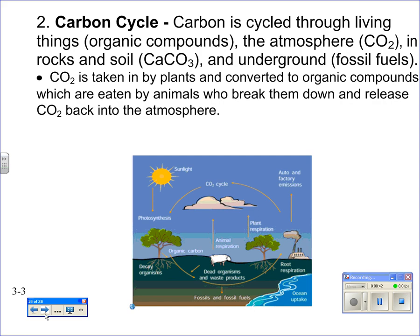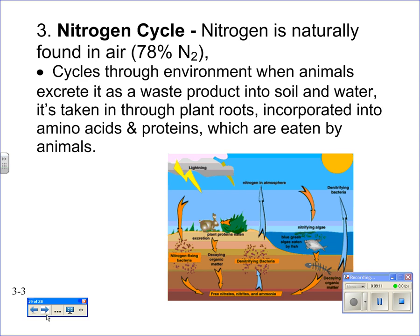The carbon cycle primarily moves through living things via organic compounds. The atmosphere and soil are also important. One of the most significant aspects for daily life is the production and use of fossil fuels, which are carbon-based compounds we utilize extensively. The nitrogen cycle involves the movement of nitrogen through the environment — 78% of the atmosphere is nitrogen, but we can't use it directly by breathing. We get it through food, incorporated into amino acids and proteins.